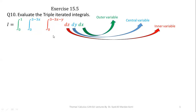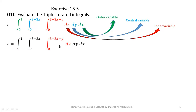The second most important thing: the limits of the inner and central variable may be constant or may be variable. The limits of Z and Y have a constant number as the lower limit, but variable terms as the upper limit. However, the limits of the outer variable are always constant because we are calculating a definite integral.